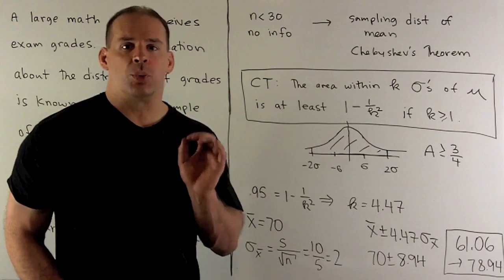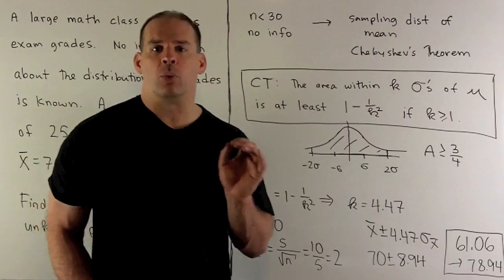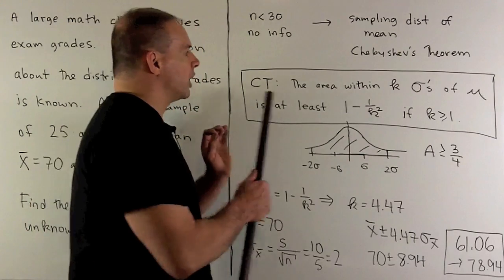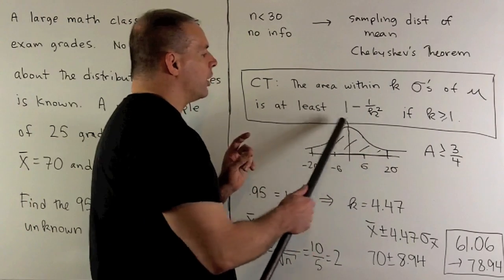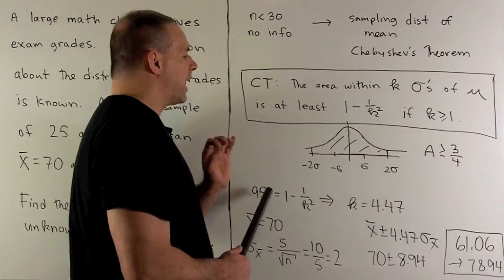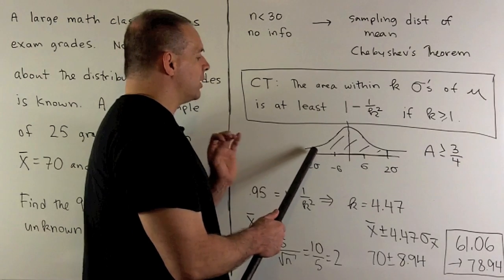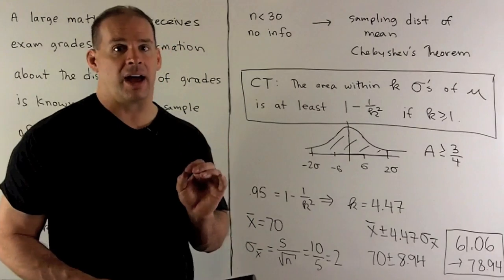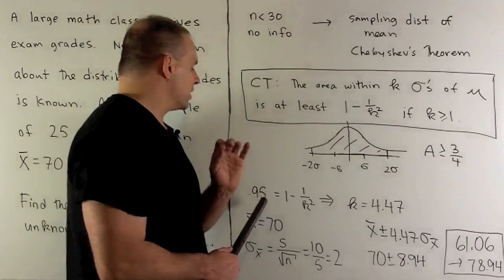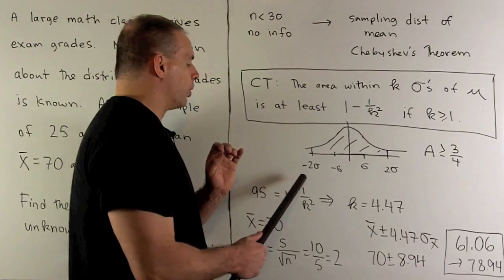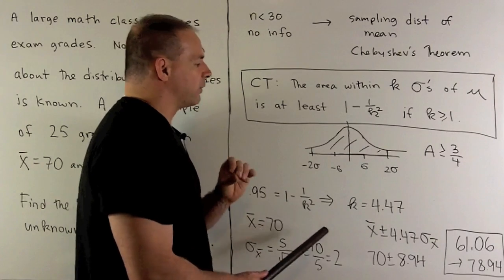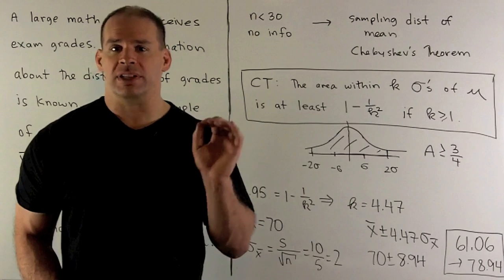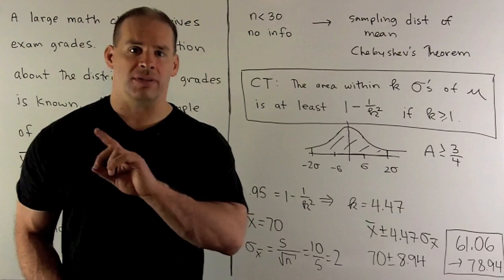To make this work in our problem, I want a 95% confidence interval, which has two tails, so Chebyshev is going to apply. We want the area under the curve to be 0.95. I'm going to set 0.95 equal to 1 minus 1 over k squared, solve for k, and I get 4.47. That's going to be the analog for the t or the z value in the previous problem.